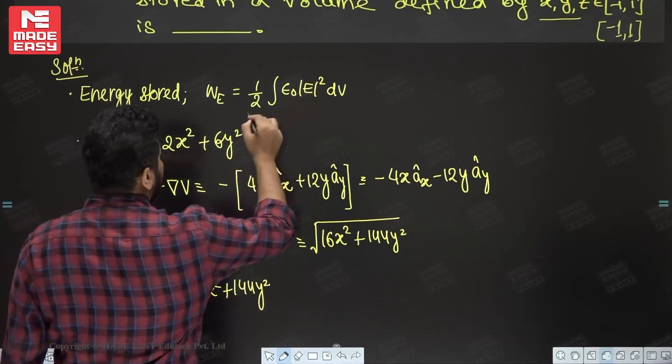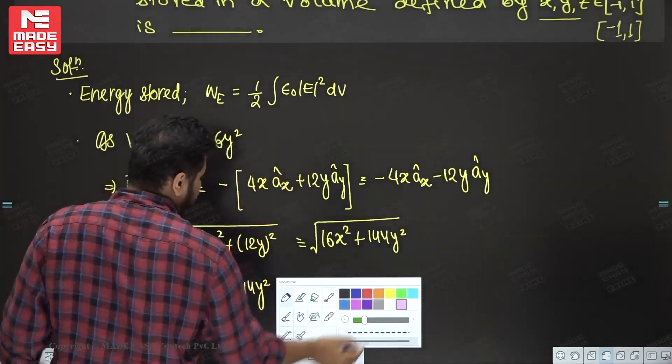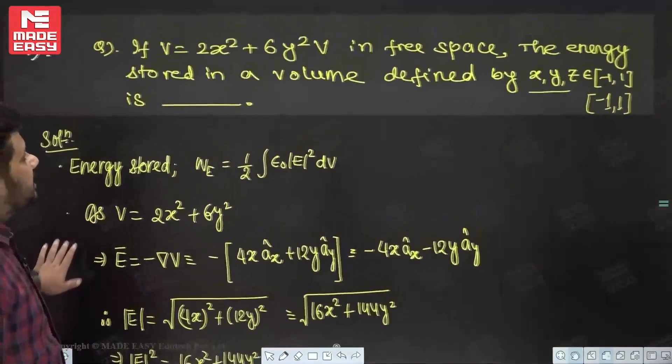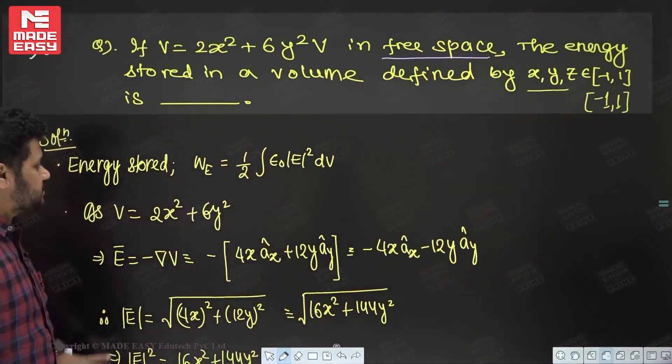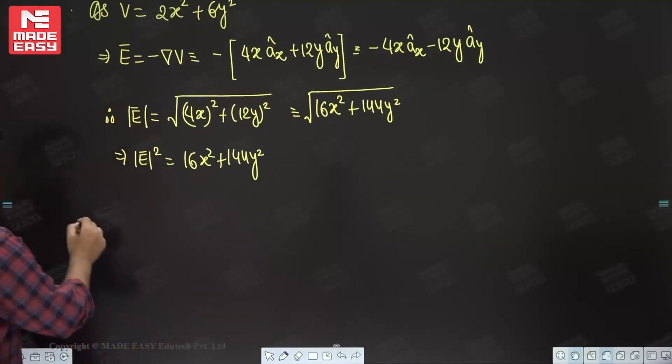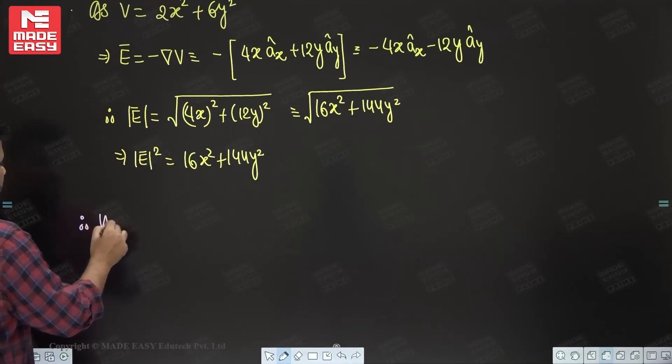Now we have got the E value. Now we can just directly substitute. It is said that it is free space, so that means epsilon will be equal to epsilon naught itself. Therefore, what is your WE?